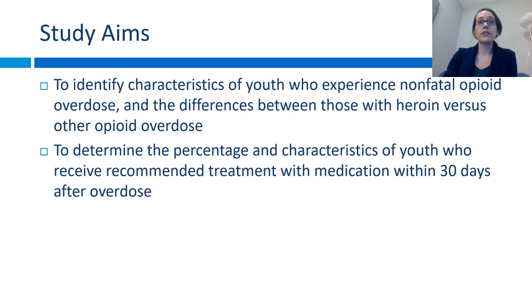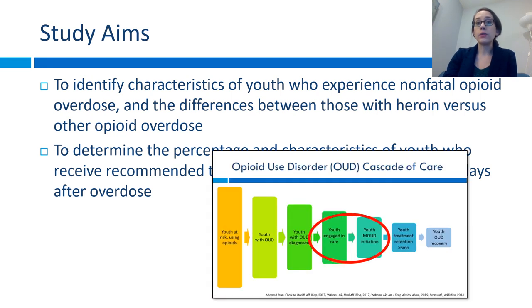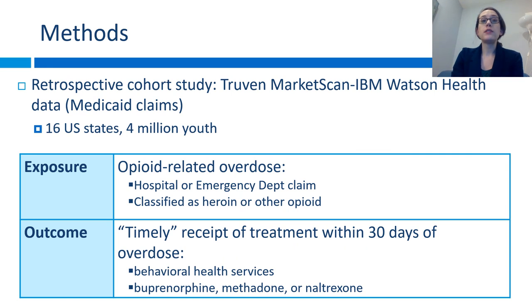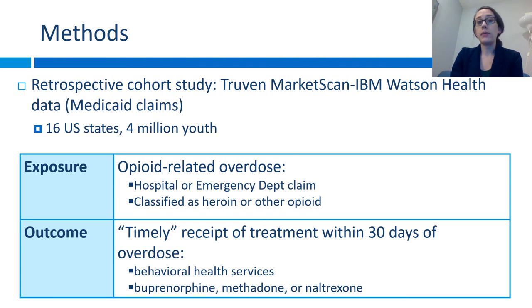My study aims were to identify the characteristics of youth who experience a nonfatal opioid overdose and the differences between those with heroin versus other opioid overdose, as well as to determine the percentage and characteristics of youth who receive the recommended treatment with medication within 30 days of an overdose — looking at the steps in the cascade of care where you're engaging in care and starting on medication. I performed a retrospective cohort study using Medicaid claims data from 16 U.S. states covering 4 million youth, focusing on those who had an opioid-related overdose in the hospital or emergency department, classified as either heroin or other opioids. For the outcome, I looked at timely receipt of treatment within 30 days, consisting of either behavioral health services alone or medication for opioid use disorder — buprenorphine, methadone, or naltrexone — either alone or in combination with behavioral health services.